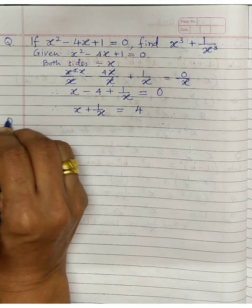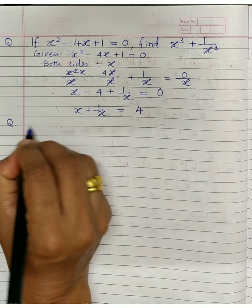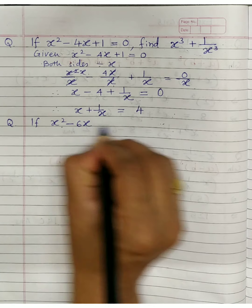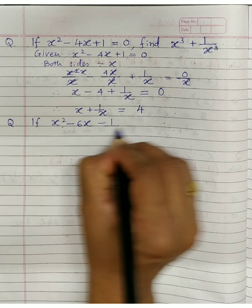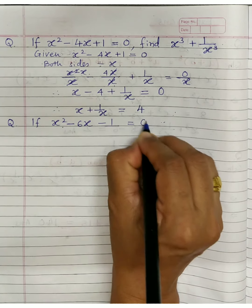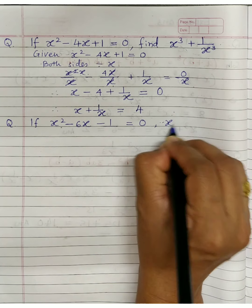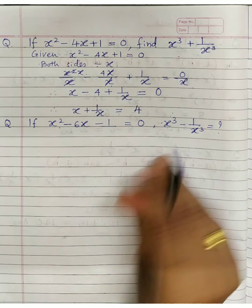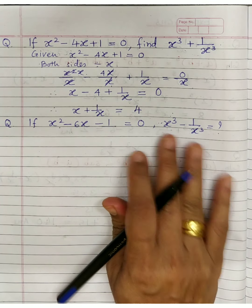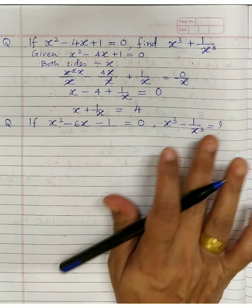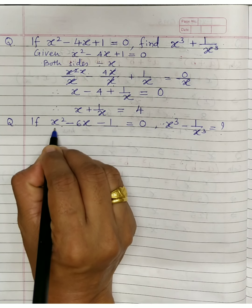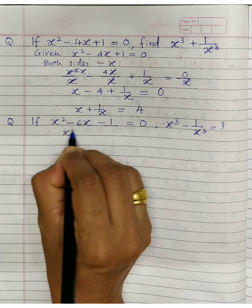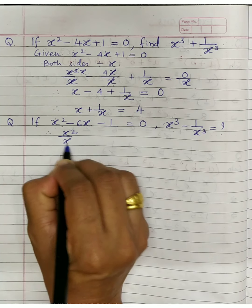Next question hint: if x square minus 6x minus 1 equals 0, find x cube minus 1 upon x cube. To find x cube minus 1 upon x cube, you need x minus 1 upon x. So again, divide the given equation throughout by x.